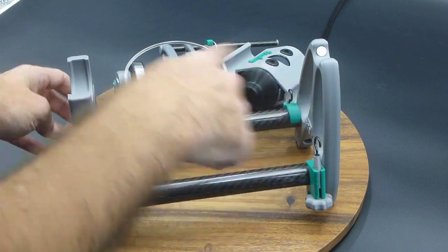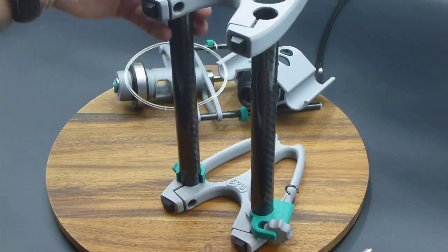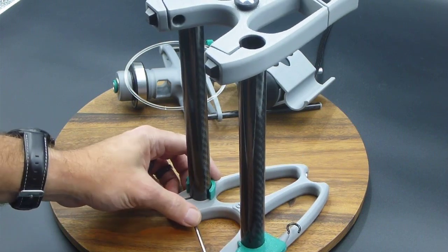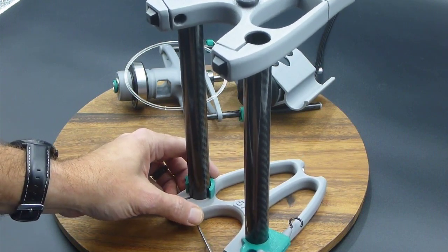Now that we have it nice and flat, we're going to tighten the four bolts in the corners here. So we have one back here. You don't want to over tighten these. They don't need to be like death grip tight.